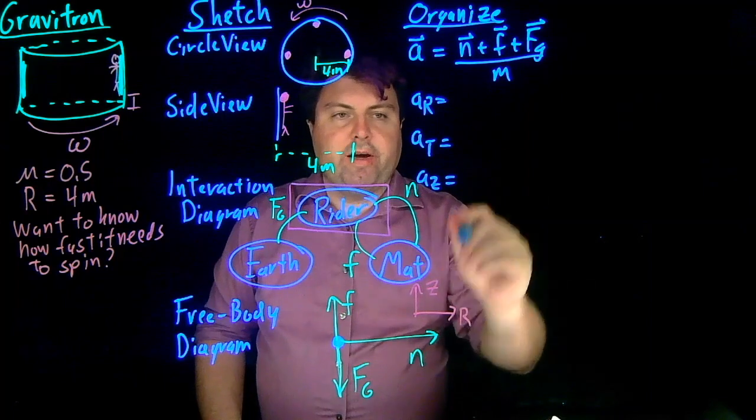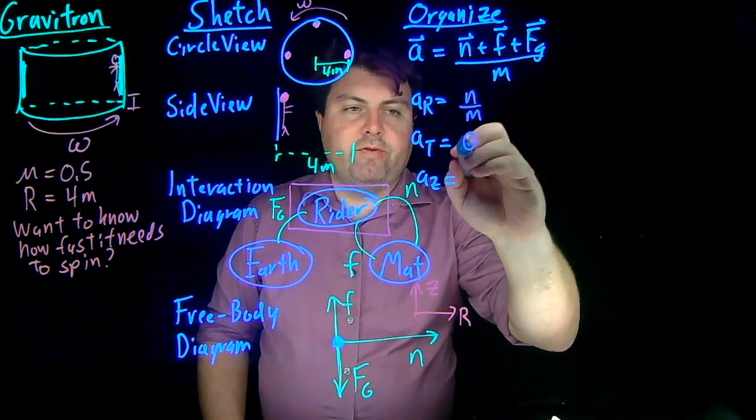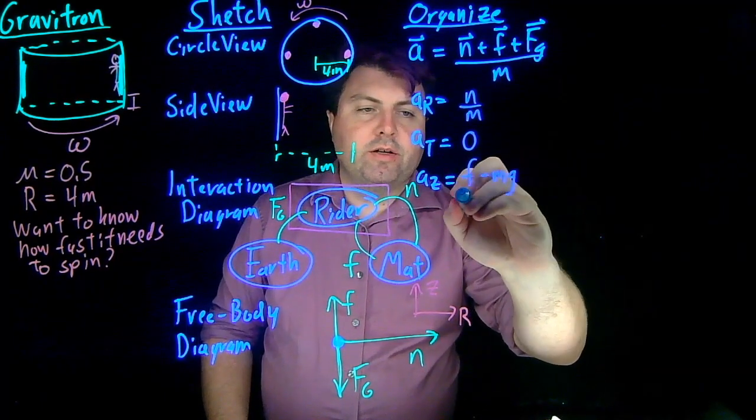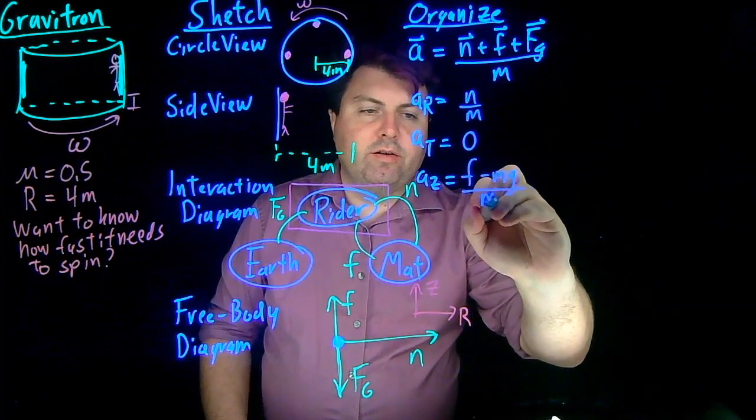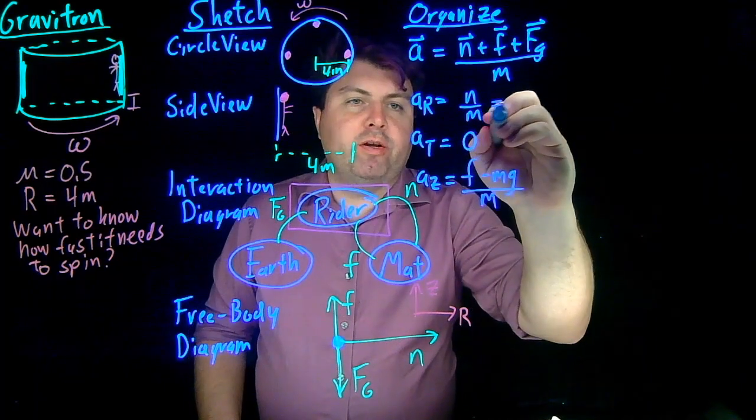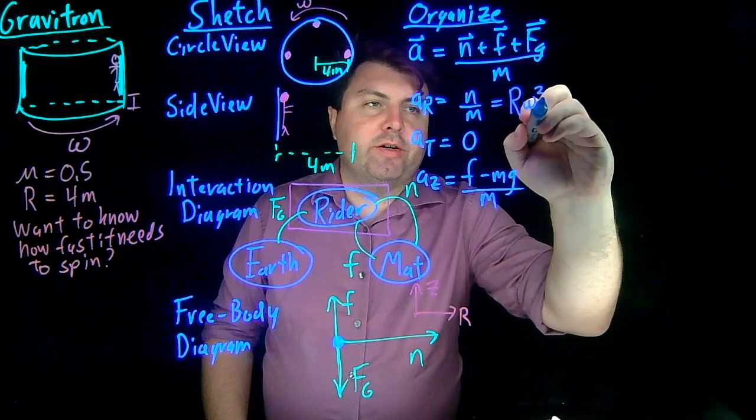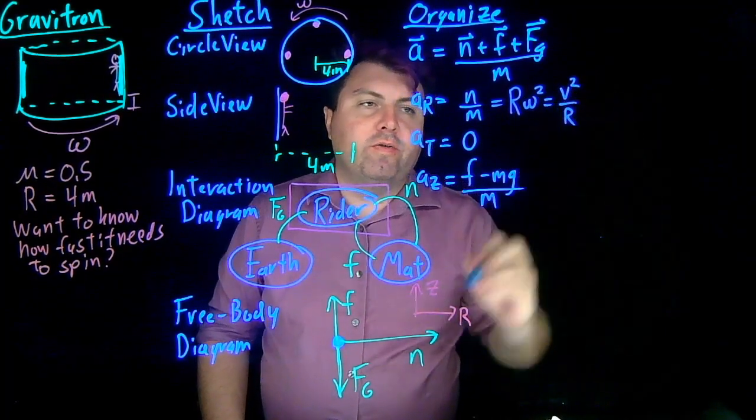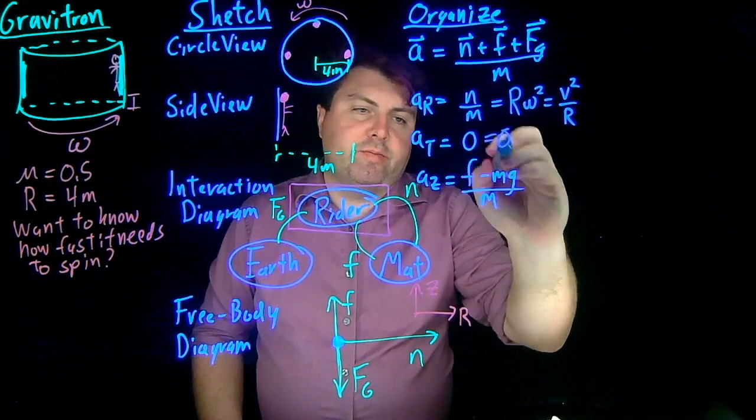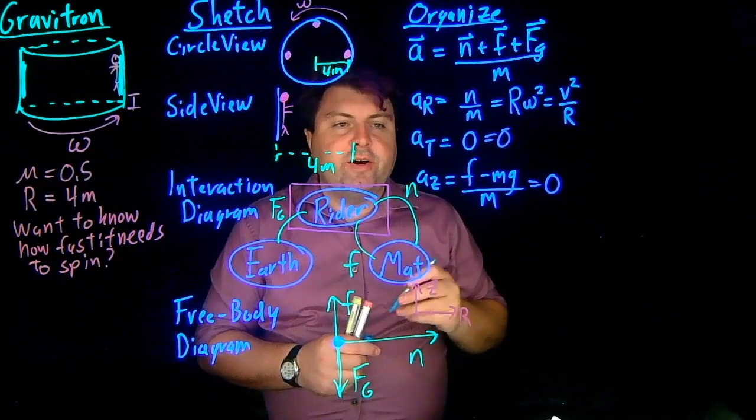So in the radial direction, we have just the normal force. In the tangential direction, we have no forces. And in the Z direction, we have the friction force minus mass times gravity. Once we have then these decompositions, we can say what we know our accelerations are. So our acceleration in the radial, we can write as either R omega squared, or we could write as V squared over R. We're not going to use this one, but instead the R omega squared. Our AT is going to be zero, and our AZ is also going to be zero. So very quickly from this, we can start our solve step.